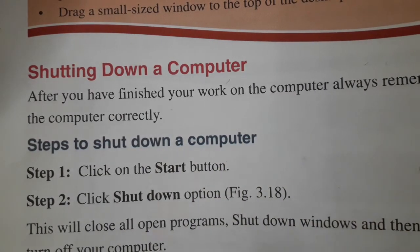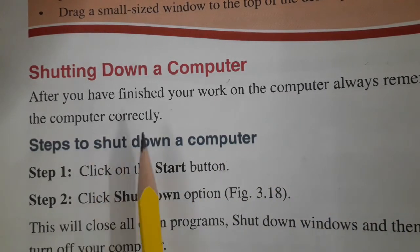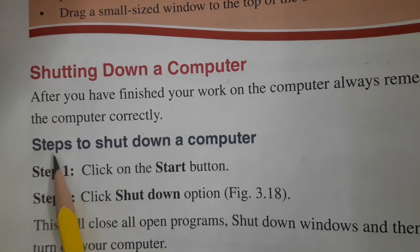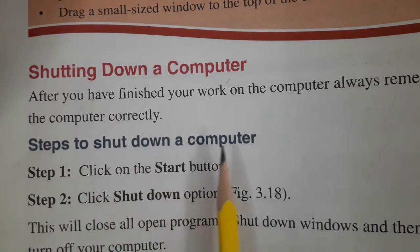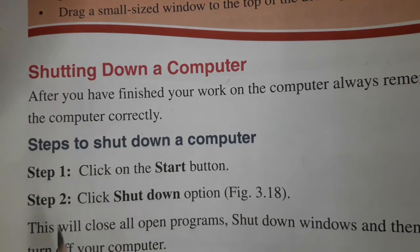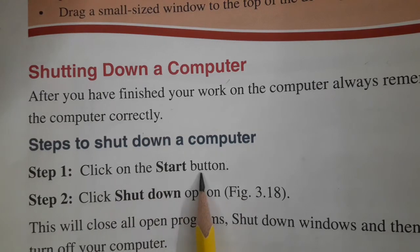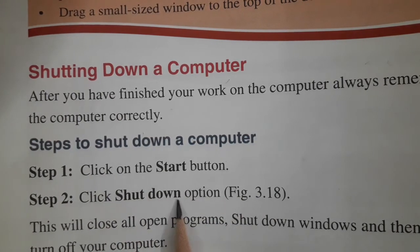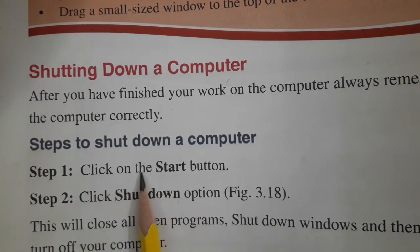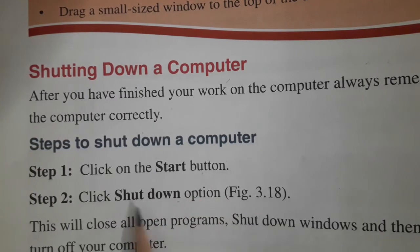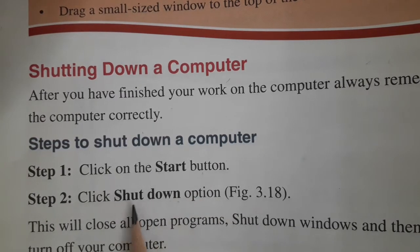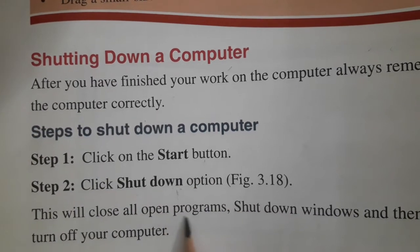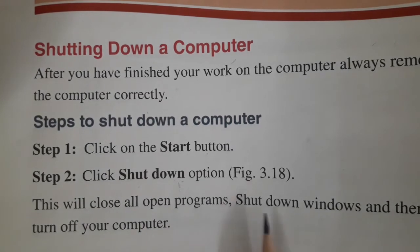Look at the steps to shut down a computer. First, click on the Start button, then click Shut Down. When you click on the Start button there will be the Shut Down option, so just click it. This will close all open programs, shut down Windows, and then turn off your computer.